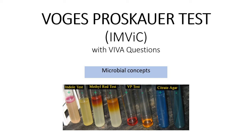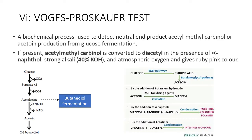Hello and welcome back to Microbial Concepts. We are discussing IMVIC tests, and this is the third video where we are going to cover the Voges-Proskauer test. The VP in this test group stands for Voges-Proskauer. It is a biochemical test used to detect a neutral end product.